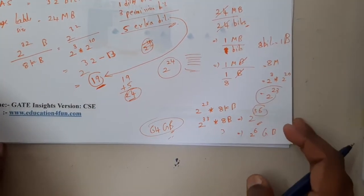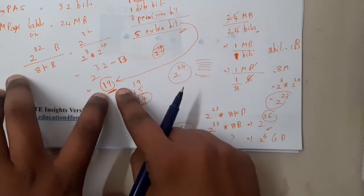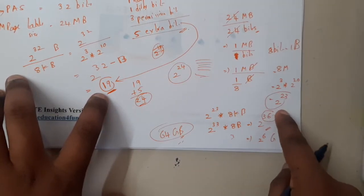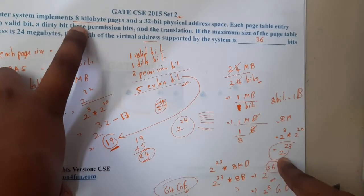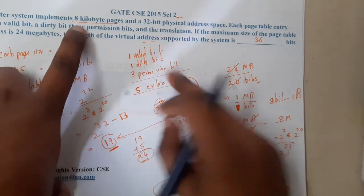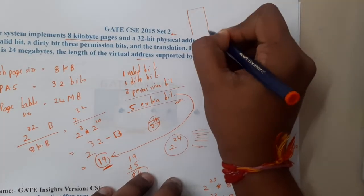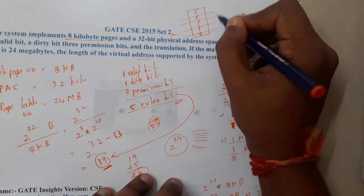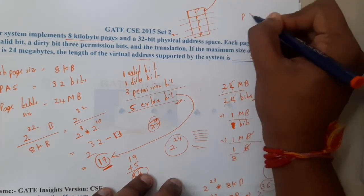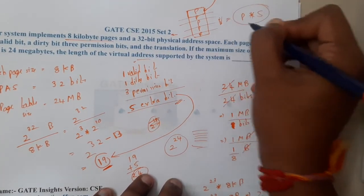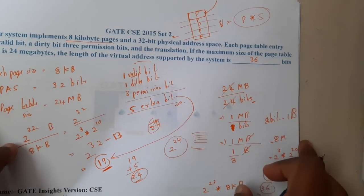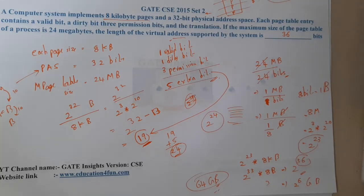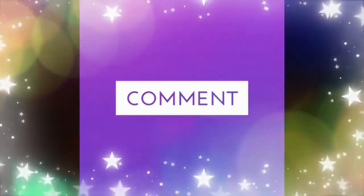So to summarize: first we found how many bits are used for the page table entry address, then we calculated the number of entries from the maximum page table size. Multiplying the number of entries by the size of each page gives the total virtual memory size. The virtual memory is divided into multiple pages, and number of pages times page size gives the total virtual memory. I hope everyone got a clear idea. In the next lecture we will continue with the next question. Thank you, like share and subscribe for more videos.